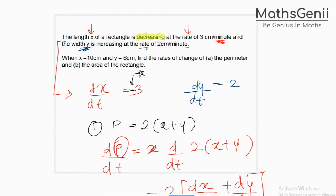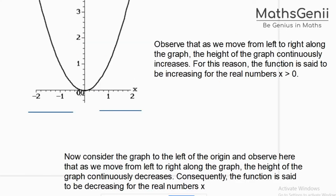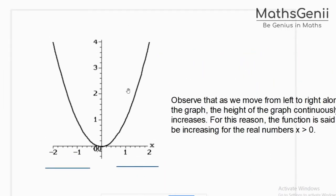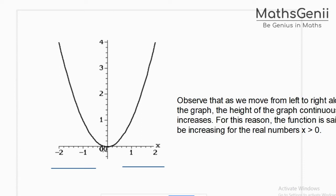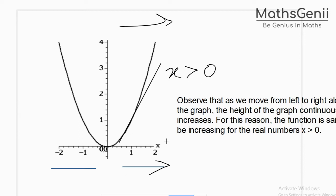Let's move to the interesting part: increasing and decreasing functions. It's very simple. Looking at the graph, observe from left to right. From 0 to 1, 2, 3, 4 — it's increasing. As x goes from left to right with x greater than 0, the function is increasing. We say the function is increasing for x greater than 0.